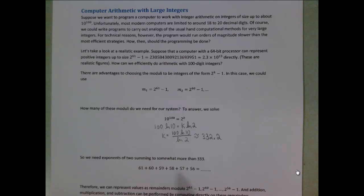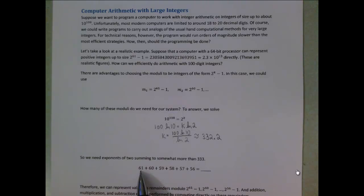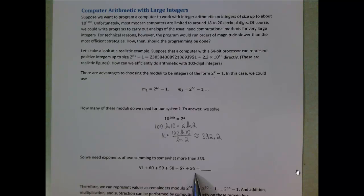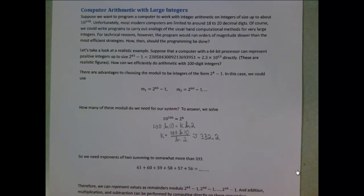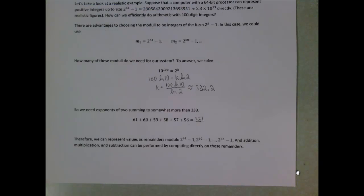If we look at our exponents of 61, 60, 59, etc., we find we need to sum 6 of these, and in that case we get the sum 351. Therefore, we'll be able to represent our values as remainders modulo 2^61 minus 1, 2^60 minus 1, down to 2^56 minus 1. And then addition, multiplication and subtraction can be performed directly by computing on those remainders rather than converting back to the long digit form of the integers.